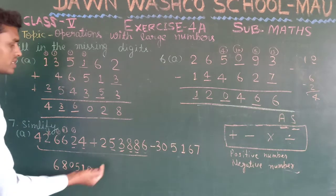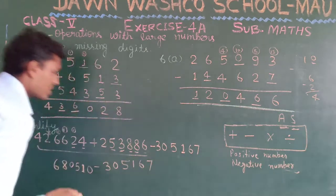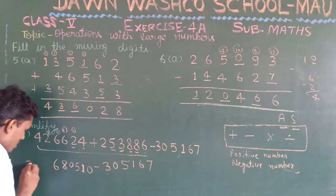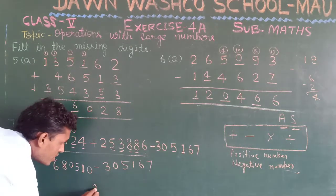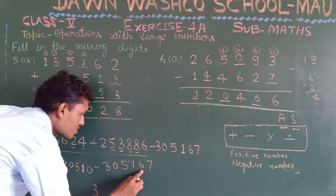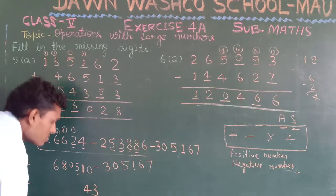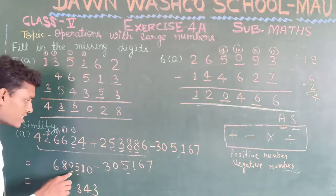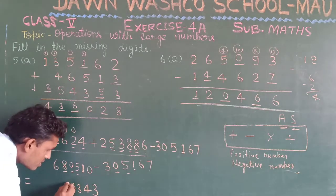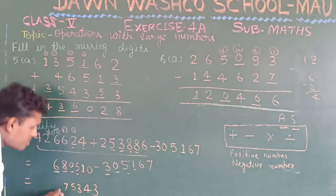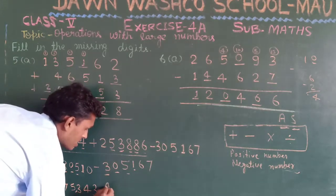So the sum is six lakh eighty thousand five hundred ten. Now we separate the negative number: three lakh five thousand one hundred sixty-seven. We subtract: 0 minus 7 — borrow to get 10, 10 minus 7 is 3. Next 0 — borrow to get 10, 10 minus 6 is 4. Four minus 1 gives 3. Zero minus 5 — borrow to get 10, 10 minus 5 gives 5. Seven minus 0 is 7. Six minus 3 gives 3. The answer is three lakh eighty thousand three hundred forty-three.